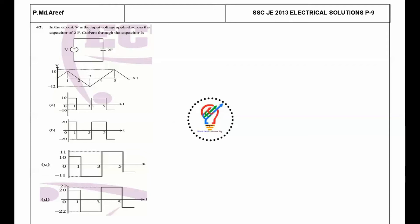The next question is: in a circuit, V is an input voltage applied across the capacitor 2F, current through the capacitor is? The general formula is IC = C × dV/dt, so we need to find the slope of voltage. During the first period, it is 10/1, so IC = 2 × 10/1.